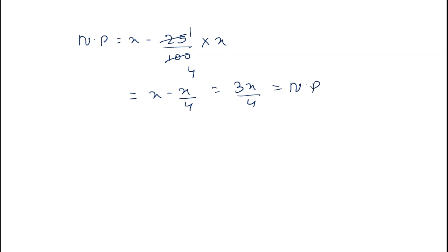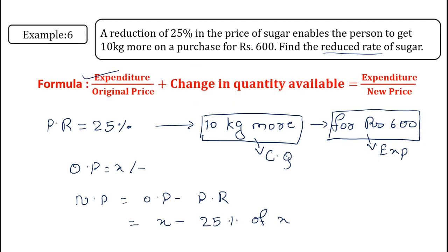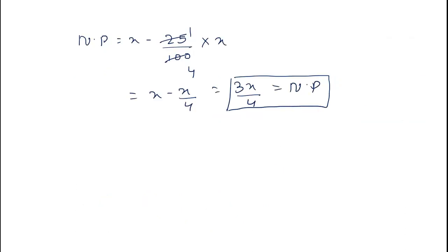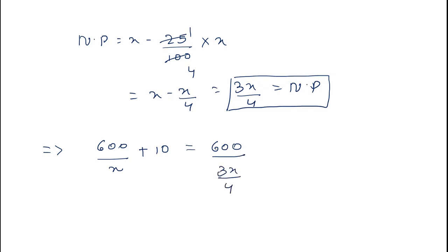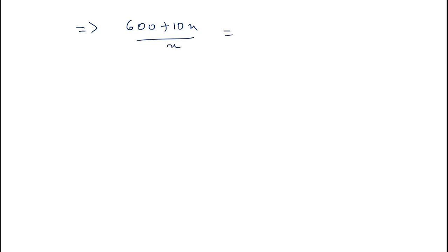Now since we have all the values, substitute them into the formula. The expenditure of 600 divided by the original price x, plus 10 (the change in quantity), equals 600 divided by the new price 3x upon 4. This gives us the equation: 600 plus 10x upon x equals 600 into 4 upon 3x.